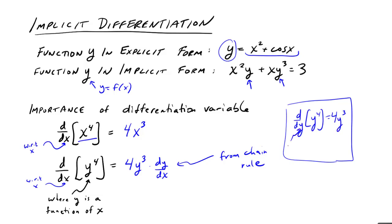As a side note, if we were looking at d/dy of y to the fourth, then that would just be 4y³ because in this case it's with respect to y. But if it's a variable that's within the function, then we need chain rule.